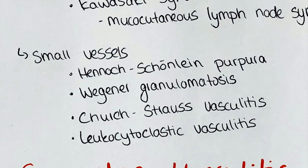Vasculitis of the small vessels is a larger group. Diseases in this group include Henoch-Schönlein purpura, Wegener granulomatosis, Churg-Strauss vasculitis and leukocytoclastic vasculitis.